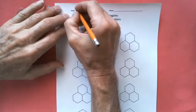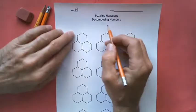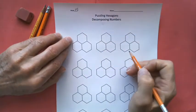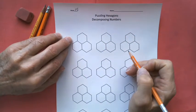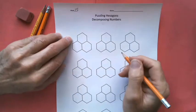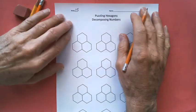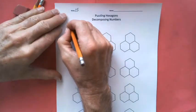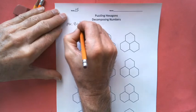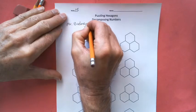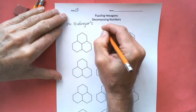So here's a worksheet of puzzling hexagons. That would be a unit in itself, the hexagon. We weren't going to deal with units here. We're just going to deal with Mr. Budinger's three-number principle.